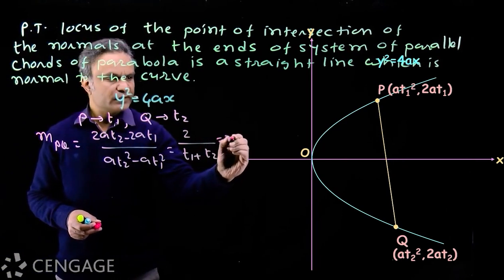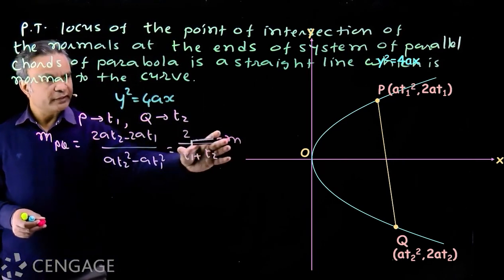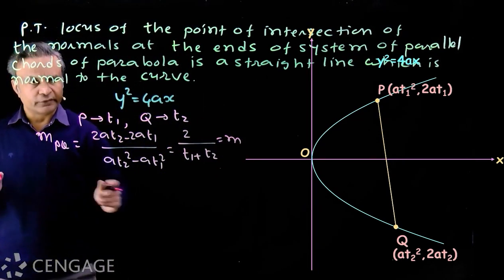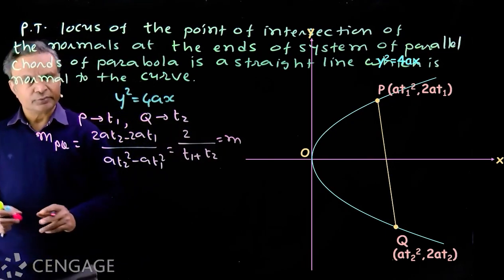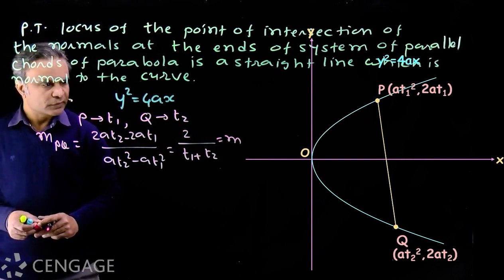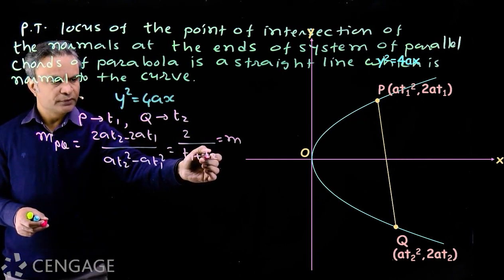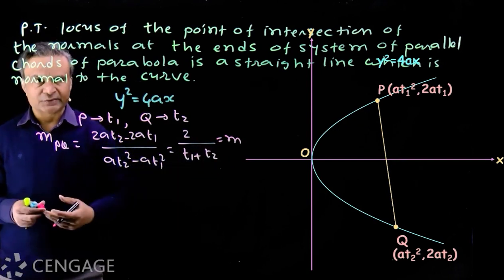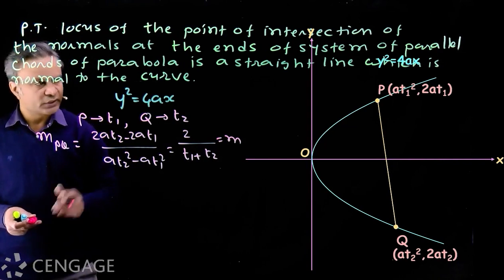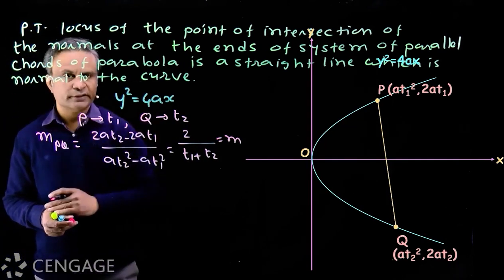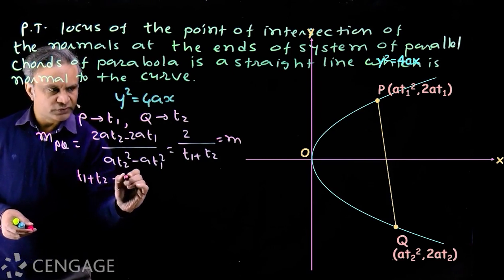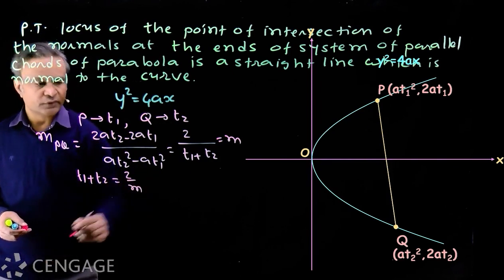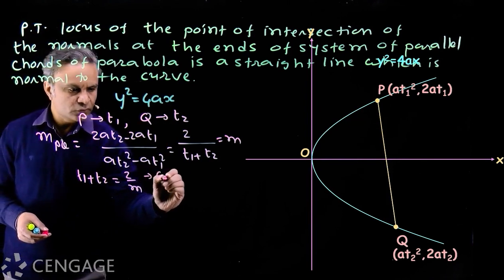Suppose this value is m. This value is constant — t1 and t2 are variables but 2/(t1+t2) is constant. This is possible because if t1 increases then t2 decreases, and if t1 decreases then t2 increases — the sum remains constant because slope is constant. From this we get t1 + t2 = 2/m, and this value is constant.